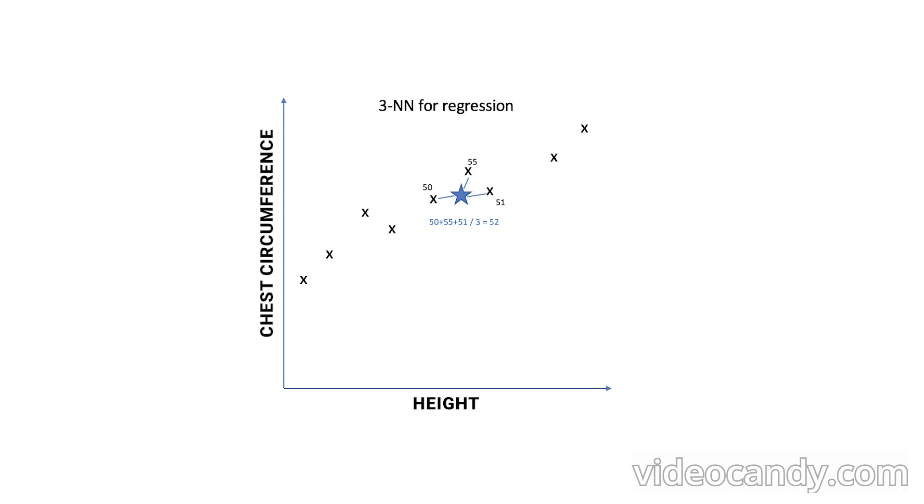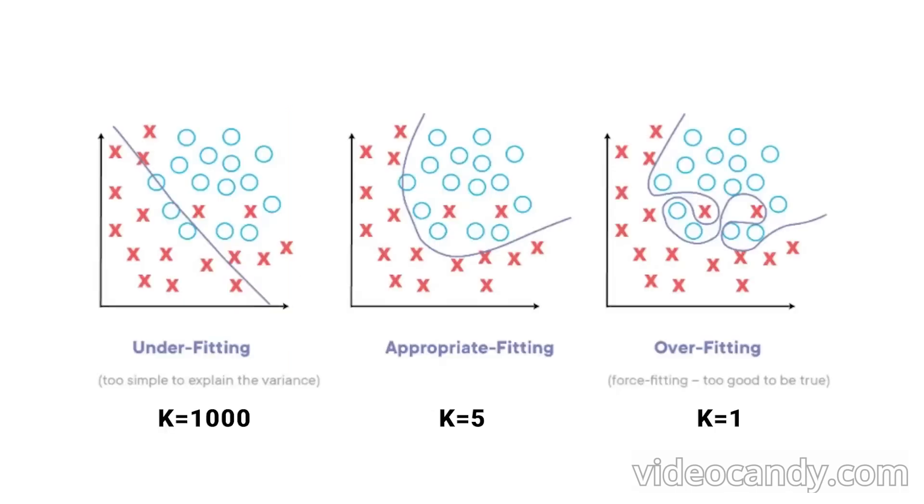You might realize that the number 3 seems a bit arbitrary, and it is. K is called a hyperparameter of the algorithm, and choosing the right K is an art. Choosing a very small number of K, say 1 or 2, will lead to your model predicting your training dataset very well, but not generalizing well to unseen data, this is called overfitting. Choosing a very large number, say 1000, will lead to a worse fit overall, this is called underfitting.